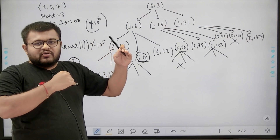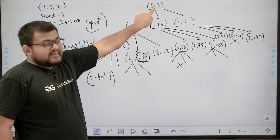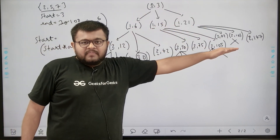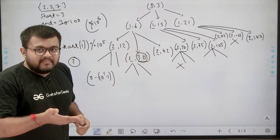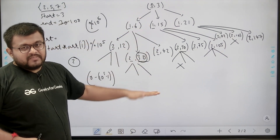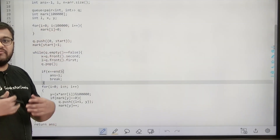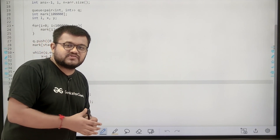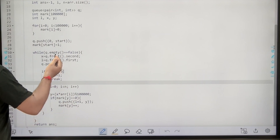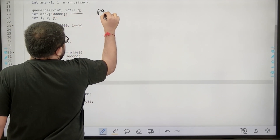We are expanding level by level, so we can apply Breadth First Search. In BFS, we take a queue and push the root element, then push neighboring nodes, then traverse the next level. We push the start element into the queue with level 0, multiply it with array elements, and if those elements haven't been seen, push them into the queue. As soon as we reach end, we return the level.